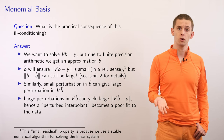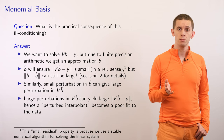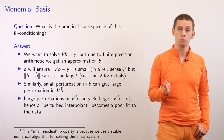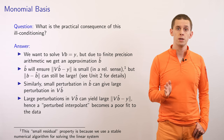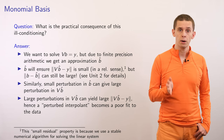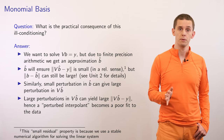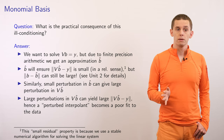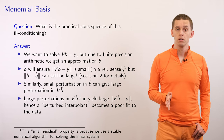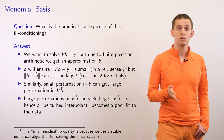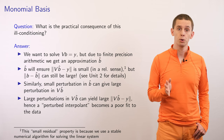Vandermonde matrices are typically ill-conditioned. The practical consequence is that when solving vb equal y, due to finite precision arithmetic, we compute an approximation b-hat. A stable numerical method can ensure the residual V*b-hat minus y is small, but because V is ill-conditioned, b minus b-hat can still have a large norm. Similarly, a small perturbation in b-hat can lead to a large perturbation in V*b-hat, causing large residuals and making a slightly perturbed interpolant a poor fit to the data.